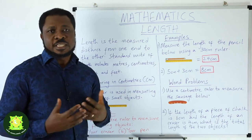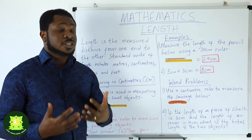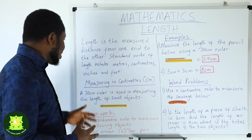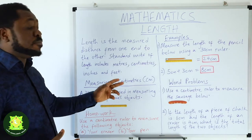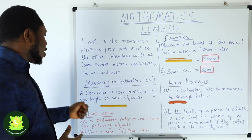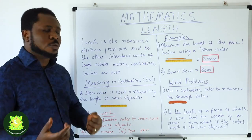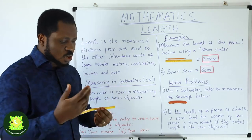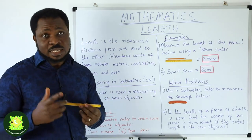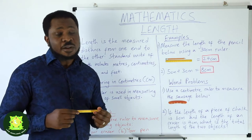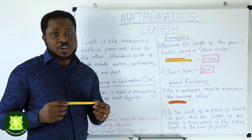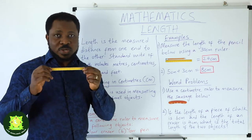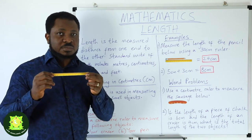We are going to be measuring in centimeters as our standard unit of length. A 30 centimeter ruler is used in measuring the length of small objects. When you go to your bookstore, you can always get a 30 centimeter ruler.